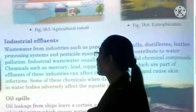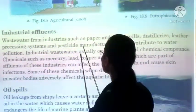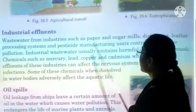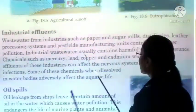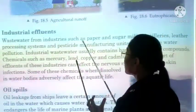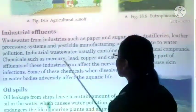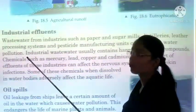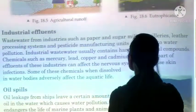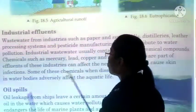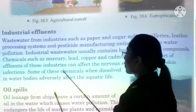Next is industrial effluents. Waste water from industries such as paper mills, sugar mills, distilleries, leather processing plants, and pesticide manufacturing also causes water pollution. When industrial waste is released into water, chemical compounds mix with water and pollute it. Chemicals such as mercury, lead, copper, and cadmium are effluents generated in industries.